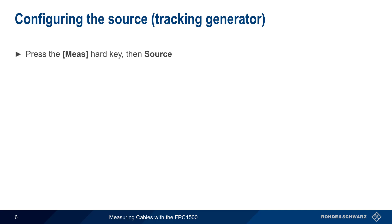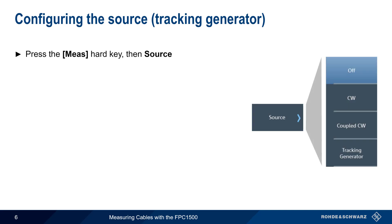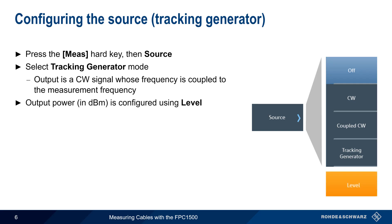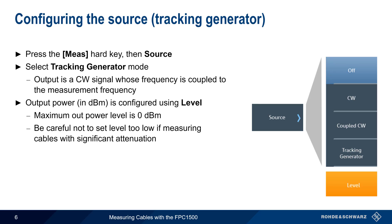To configure the FPC's tracking generator, press the Measure hard key and then Source. For distance to fault measurements, we want Tracking Generator mode, in which the output of the generator is a CW signal whose frequency is coupled to the measurement frequency — that is, the source output frequency sweeps at the same rate as the measurement. The output power of the generator is also configurable in units of dBm using the Level key, with the maximum output power being 0 dBm. Care should be taken not to set the tracking generator level too low if measuring cables with significant attenuation, as this can lead to inaccurate results.